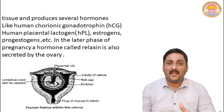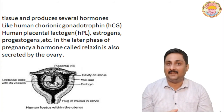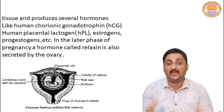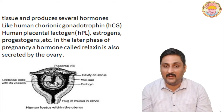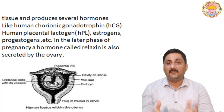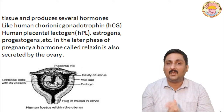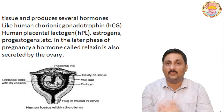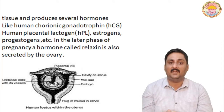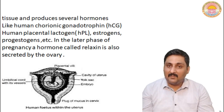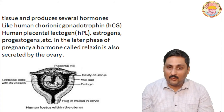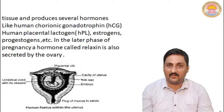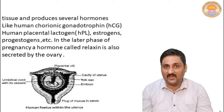Placenta itself is an endocrine gland and it secretes many kinds of hormones. The first hormone is human chorionic gonadotrophin, then human placental lactogen, estrogens, and progesterones.